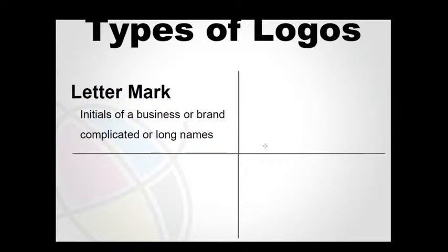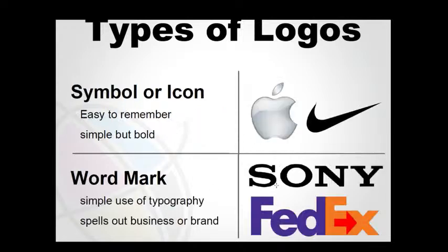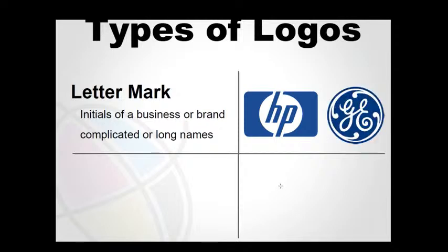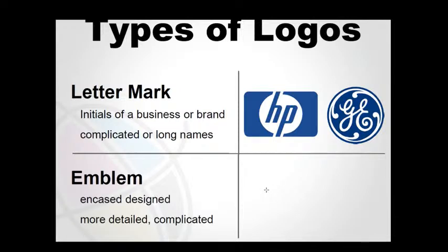Then we have the lettermark — initials of a business with a complicated or long name. If I have a company named International Business Machines, I cannot create a readable wordmark logo because it's too long, so I'll use a lettermark like IBM. HP stands for Hewlett-Packard — I can't write that out in full, so I use the lettermark initials. GE stands for General Electric. And we have emblem logos — detailed, complicated designs like a shield. Harley-Davidson and the NFL use emblem logos.